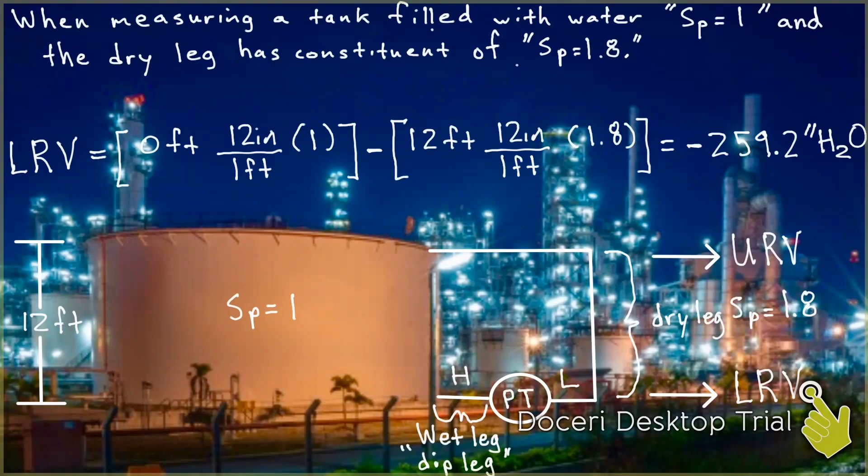We have to convert that all into inches. So we're going to convert our feet into inches, so we can make it into inches of H2O. So the lower range value ends up equaling negative 259.2 inches of H2O.